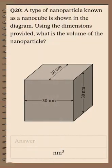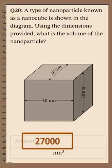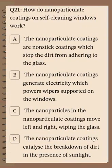Question number 20: A type of nanoparticle known as a nanocube is shown in the diagram. Using the dimensions provided — length 30, width 30, and height 30 nanometers — what is the volume? The volume is 30 times 30 times 30, giving 27,000 cubic nanometers.